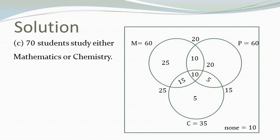Looking at the third one it says 70 students study either math or chemistry. Now how do we get this number? Well we can just take the union of M and C and we find that that number should be 60 plus 5 plus 5 which is equal to 70. So this one is true.